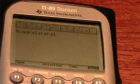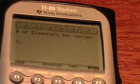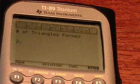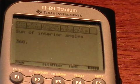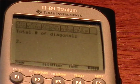It's a quadrilateral. The number of diagonals per vertex is 1. The number of triangles formed is 2. The sum of the interior angles is 360 degrees. The total number of diagonals is 2.